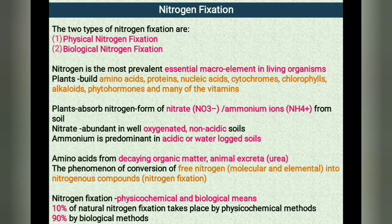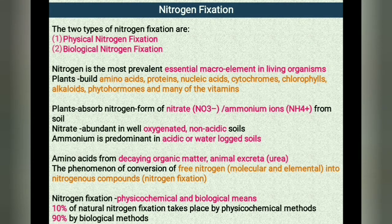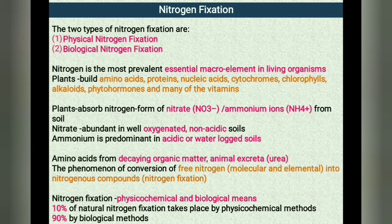Nitrogen is obtained by plants mainly from the atmosphere. It occurs as free diatomic molecules in the air. It is a highly inert gas that cannot be used directly by higher plants and therefore has to be fixed. The phenomenon of the conversion of free nitrogen into nitrogenous compounds is called nitrogen fixation.